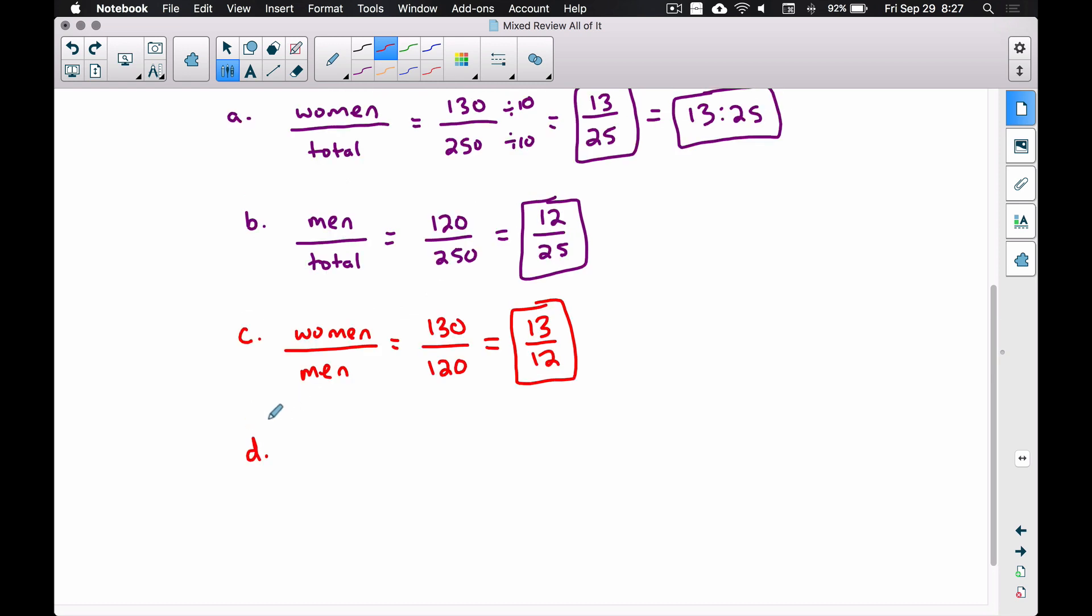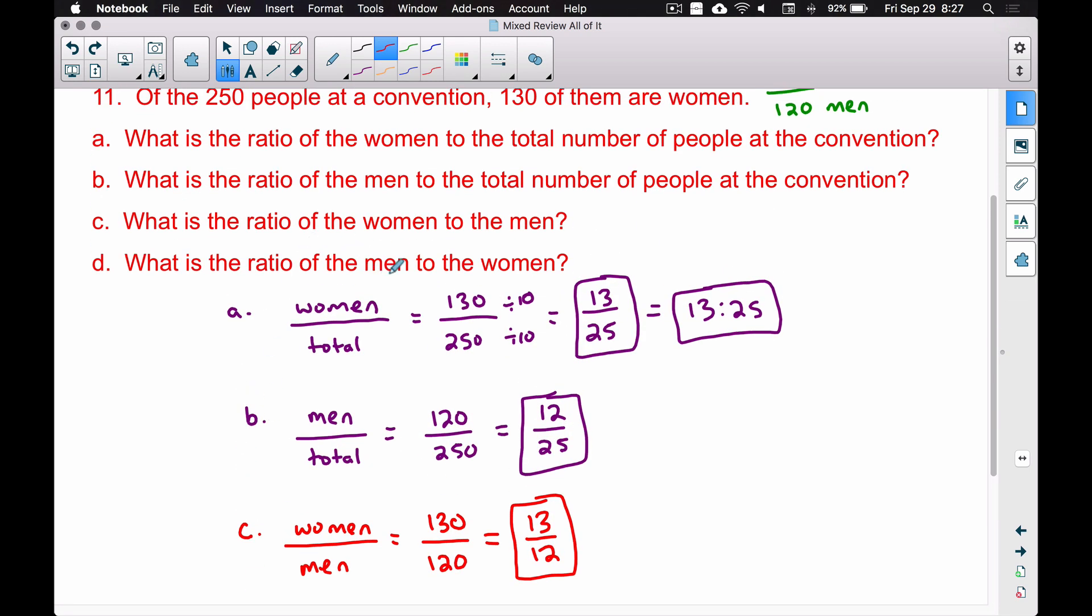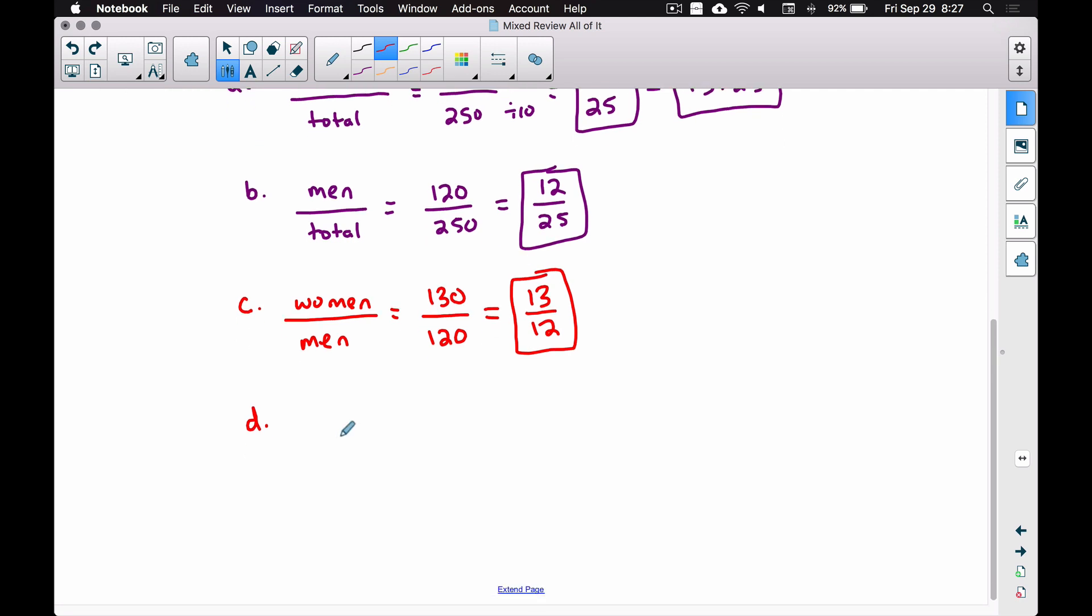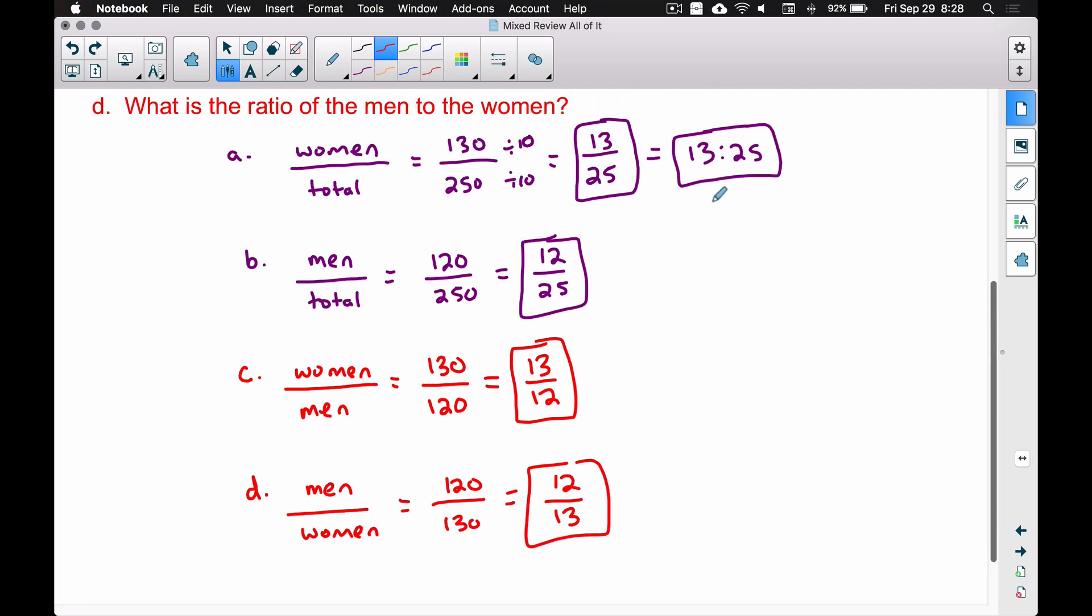Question d: What's the ratio of men to women? Really, we can just reverse this fraction or find the reciprocal, but I want to write it down anyway. Men to women is 120 over 130. If we simplify this, dividing top and bottom by 10, we get 12 to 13. Again, at any given point in time, we can write these ratios with a colon between them as well.